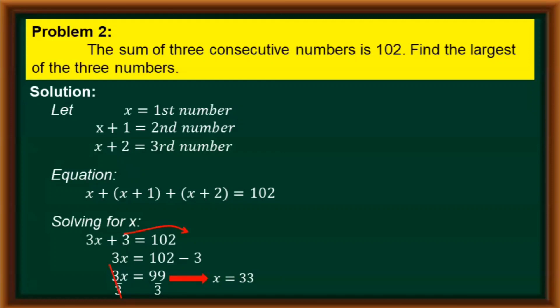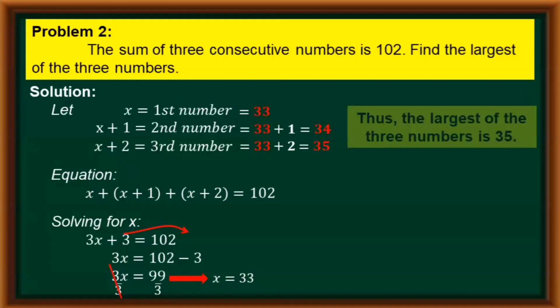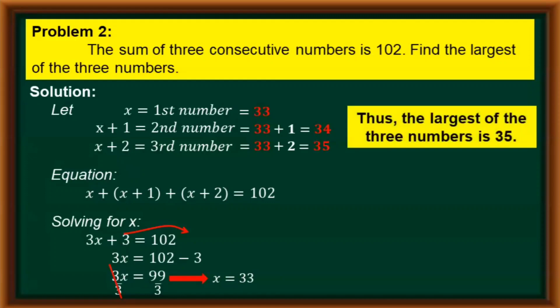Going back, the first number equals x, so the first number is 33. The second number is 33 plus 1, which gives us 34. And for the third number, we add 2, giving us 35. Since the problem asks for the largest of the three numbers, the largest is 35.